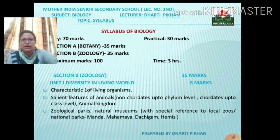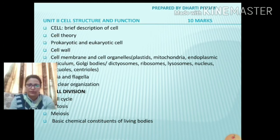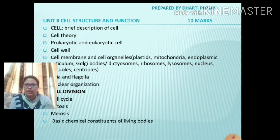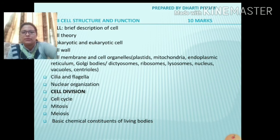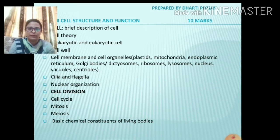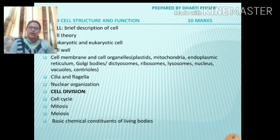Then we have the next one which is cell structure and function. We have a brief description with cell theory, prokaryotic and eukaryotic cells — prokaryotic cells are the first primitive cells and eukaryotic cells are well-developed cells. Then we have the cell wall, cell membrane, and many cell organelles like plastids, mitochondria, endoplasmic reticulum, Golgi bodies, dictyosomes, ribosomes, lysosomes, nucleus, vacuoles, and centrioles. We have to study the structure as well as the functions of all these.